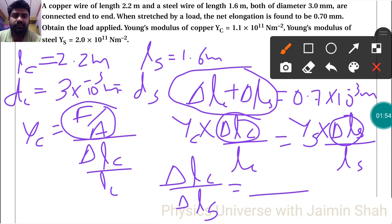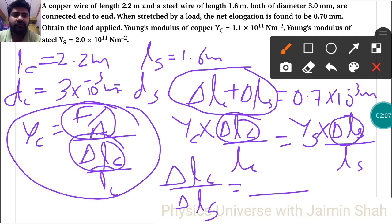And we can find the one and another. See, whenever we found any one of them, we can find this one also, because if delta Lc we got, then Lc also we have from this F upon A.